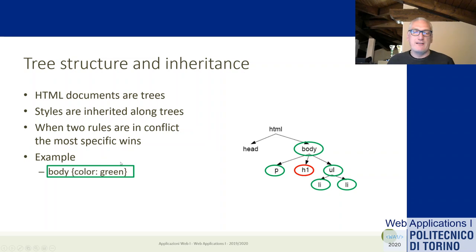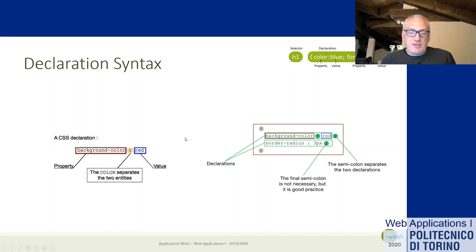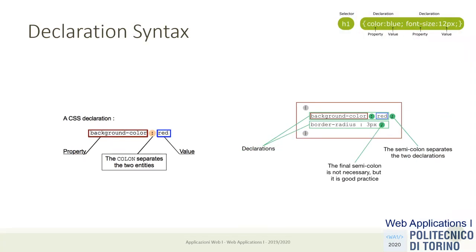There are specific rules for deciding which rules win when more than one rule applies to the same element. But first of all, the two rules might just overlap without being in conflict - maybe the green rule will set the text color and the red rule will set the font size. There is no conflict because they are setting different properties of the objects. The H1 element will have the text color as set by the body rule, and the font size set by the rule that applies to H1. It's only when the same property is matched by different rules to the same element that we have a conflict, so there are resolution rules for deciding which rule to apply.